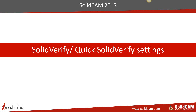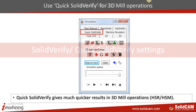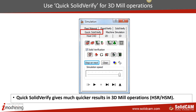When you're doing any 3D machining operations — like a mold, a die, or a large aerospace part with several hundred surfaces and a lot of G-code being generated — always use Quick Solid Verify. In a nutshell, use Quick Solid Verify whenever you're doing HSM, HSR, or any 3D milling operation. Quick Solid Verify gives much quicker results in 3D milling operations for extremely large parts.